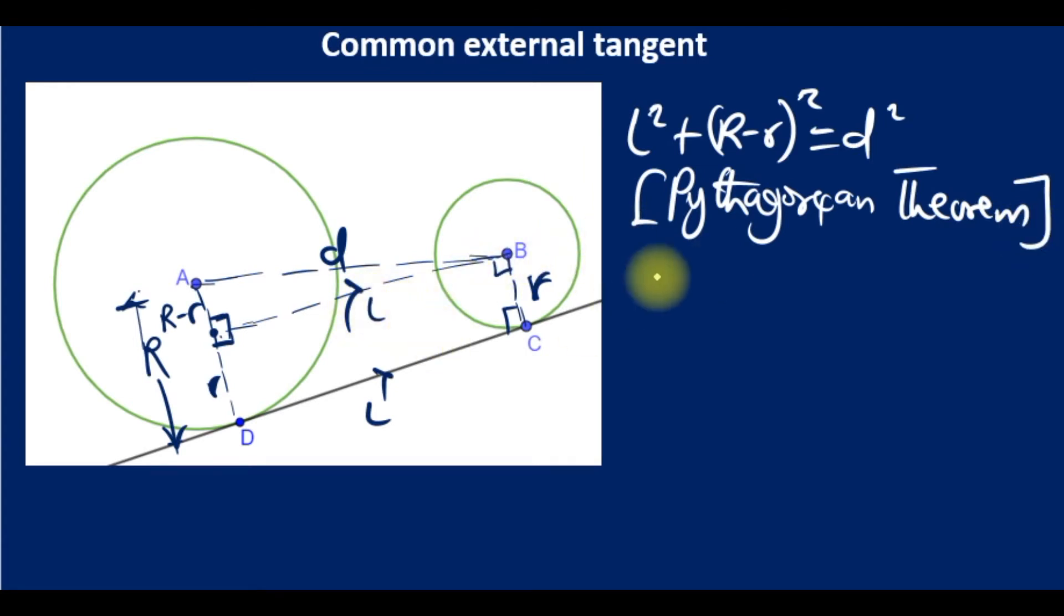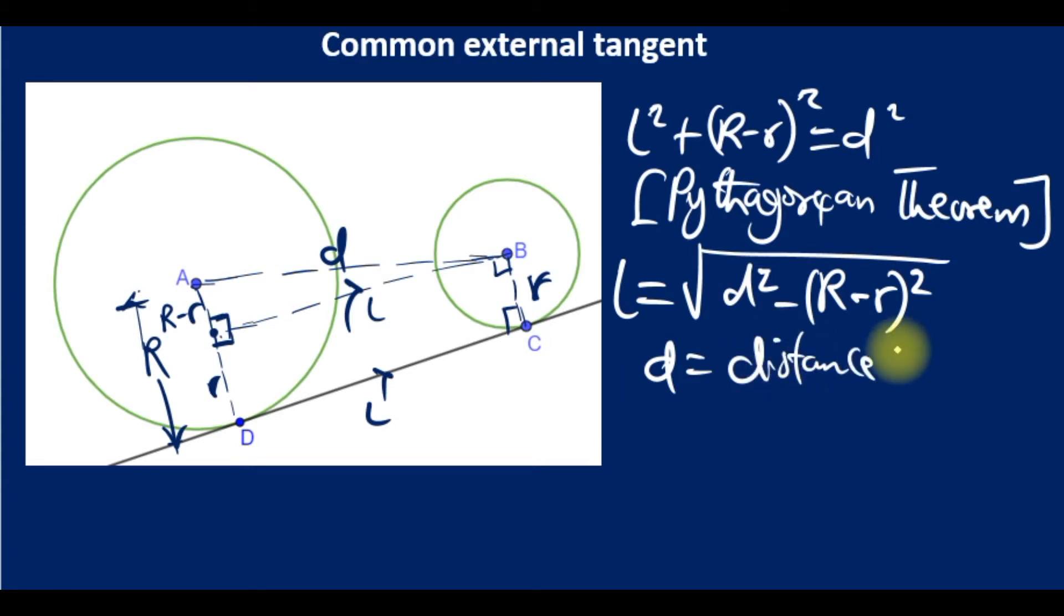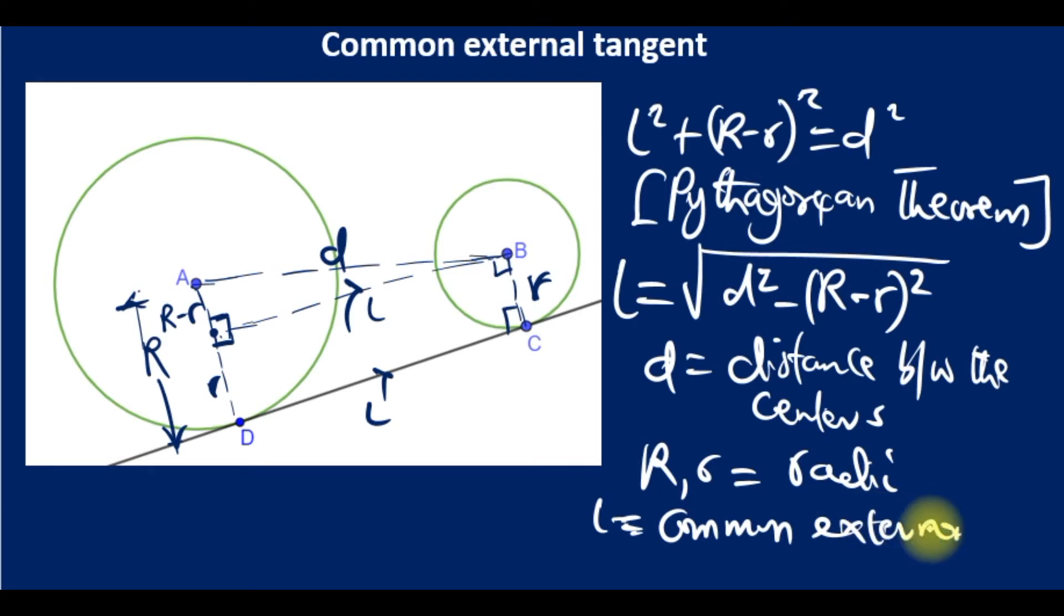Our main aim is to find l, so making l the subject of the formula: l equals the square root of d squared minus (R minus r) squared. That's the formula—each time you need to find the length of the common external tangent, use the distance between the centers where R and r are the radii.